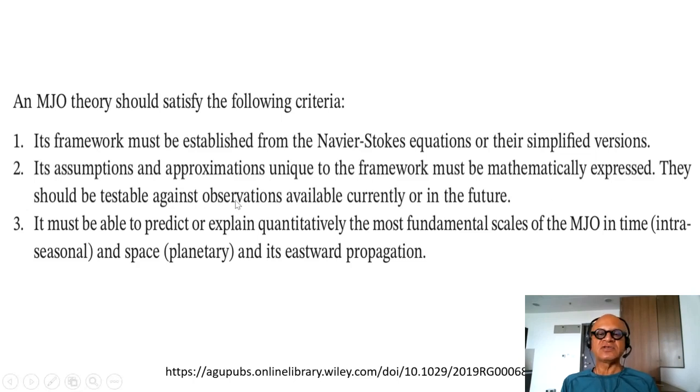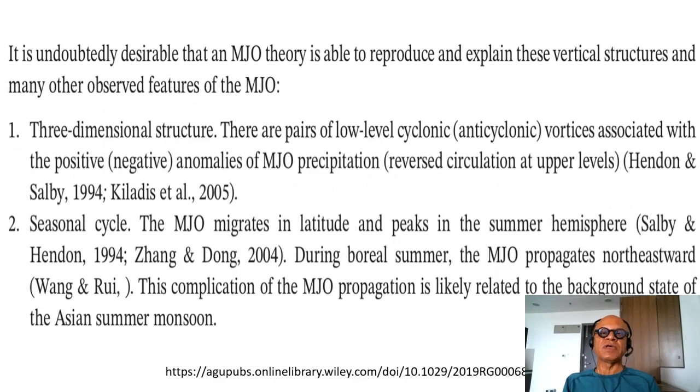They should be testable against observations available currently or in the future. So validation with observations is obviously very important. It must be able to predict or explain quantitatively the most fundamental scales of the MJO in time, so intra-seasonal time scales, and space, so the planetary scale of the MJO and its eastward propagation in terms of being slower than the free waves. We kept calling them convectively coupled equatorial waves.